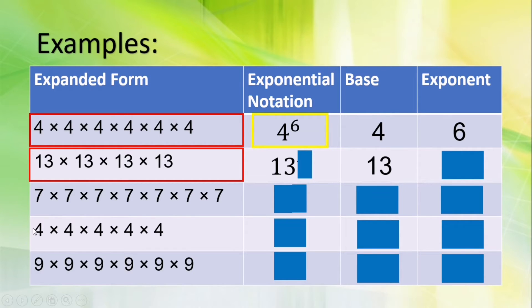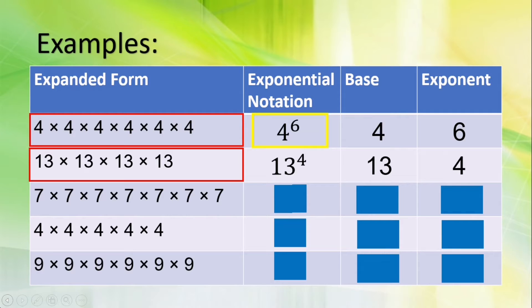One, two, three, four. There are four thirteens, meaning the exponent is four. That's right. And how are we going to read this? It's 13 raised to the fourth power.